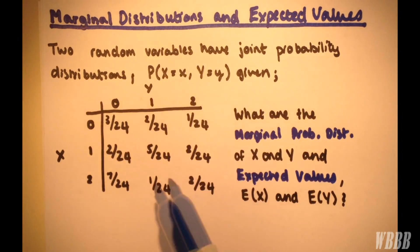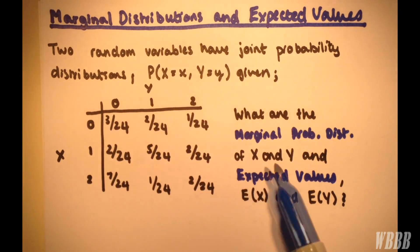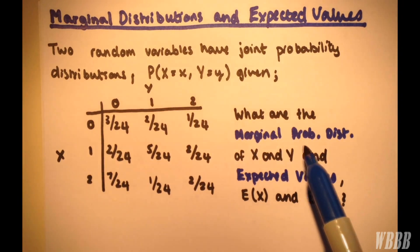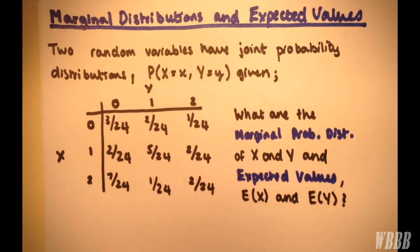So here we have two random variables with a joint probability distribution given as follows, and there's two parts to the question. What are the marginal probability distributions of x and y, and what are the expected values, E(x) and E(y)?